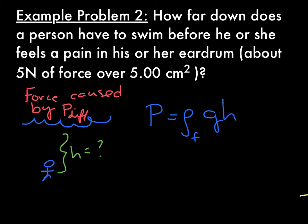So if we rearrange this, we're going to get P over rho G equals H. Now we're going to use the fact that pressure is force over area, so that's 5 newtons over, be careful with units here,